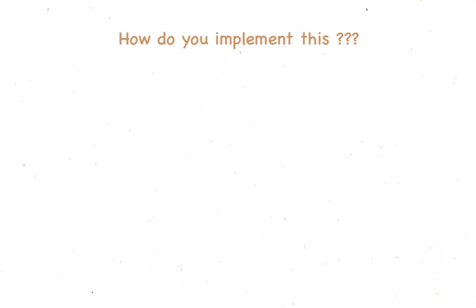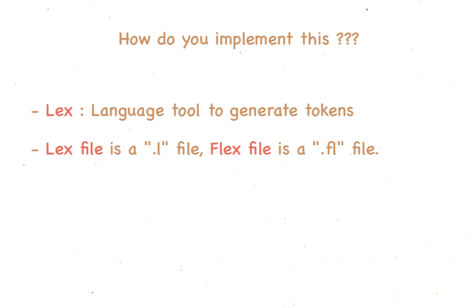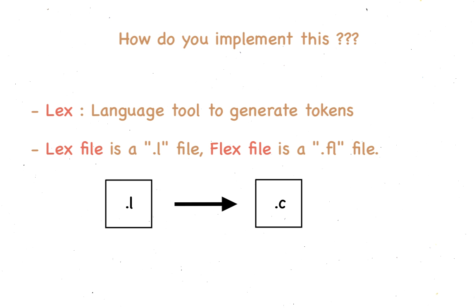Now the big question that's on everybody's mind: how do you implement this? You can generate tokens in a language tool called Lex, which is short for Lexical Analyzer. In this .l file, or the .fl file for Flex, you generate your own tokens. Lex files are actually converted to C behind the scenes, but writing Lex files is much easier compared to writing C files. Around 50 lines of Lex is converted to over 2,000 lines of C.